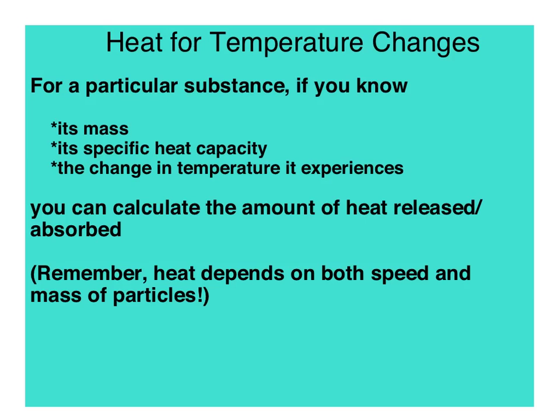The sheet you received in class has some specific heat capacities for just a few substances. This is by no means inclusive, but it just gives you an idea of some different values for specific heat capacities. Notice the units, again, of joules per gram per degree Celsius. It is good for you to know that the specific heat capacity of water is extremely high, 4.184 joules per gram per degree Celsius.